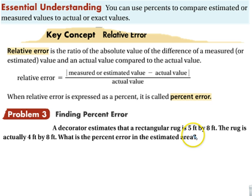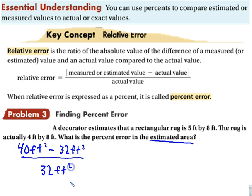A decorator estimates that a rectangular rug is 5 feet by 8 feet. The rug is actually 4 feet by 8 feet. What is the percent error in the estimated area? So we're doing the estimated area. So we want the measured or estimated. So we think it's 40 feet squared. It actually is 32 feet squared. So we're going to subtract those two things, and we're going to take it over the actual value, which is 32 feet squared.